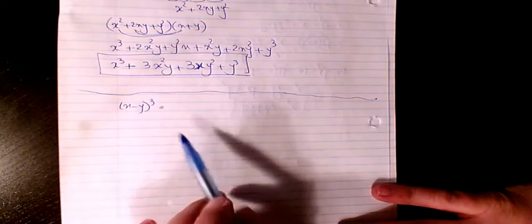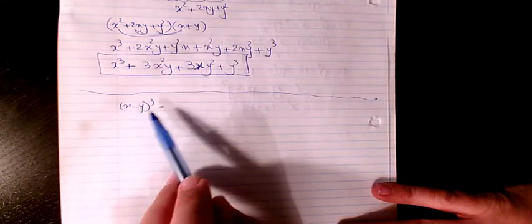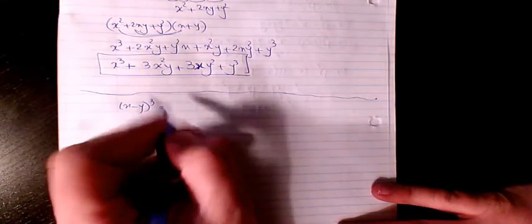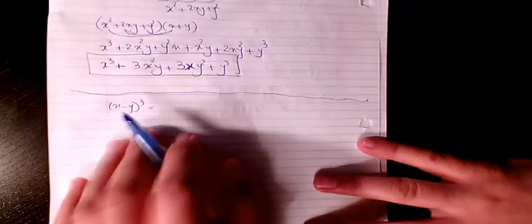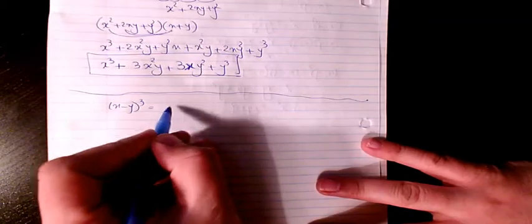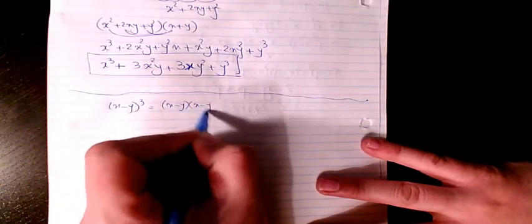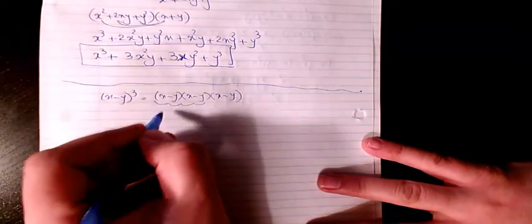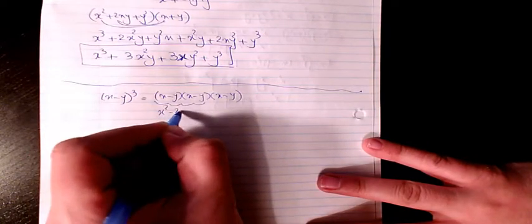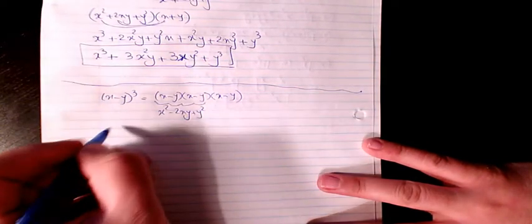In this video I want to show you how to prove and how to solve (x - y)³. In the previous video we had (x + y)³. So (x - y)³ is the multiplication of three (x - y) factors. So (x - y) times (x - y) gives us x² - 2xy + y², then times (x - y).